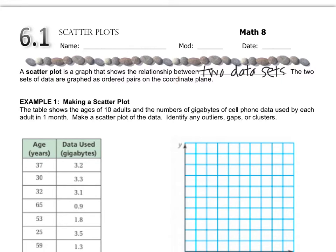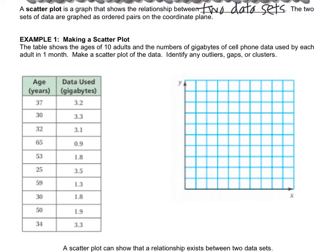The data sets are graphed as ordered pairs on the coordinate plane. In example 1, we have a table that shows the ages of 10 adults and the number of gigabytes of cell phone data used by each adult in one month.